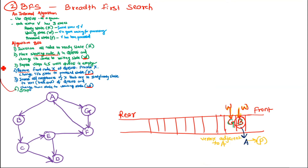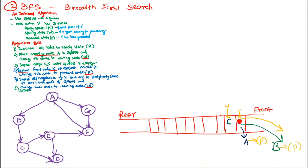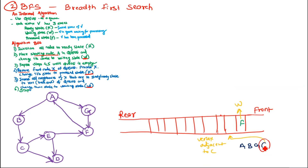This process repeats for each vertex. Vertex B is removed from the front, its state changes to process state, and its adjacent node C (in ready state) is inserted into the queue with state changed to waiting. Next, vertex G is at the front — it is removed, and its adjacent vertex F is inserted into the queue. Then C is taken out and its adjacent vertices E and D, which are in the ready state, are inserted at the rear of the queue.